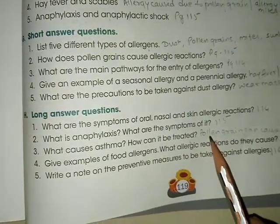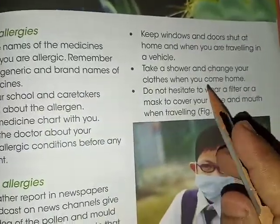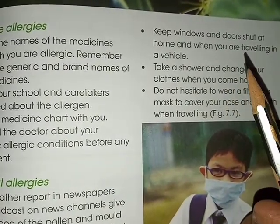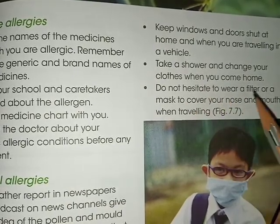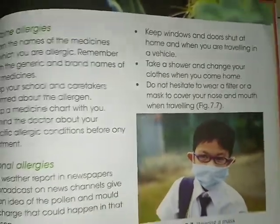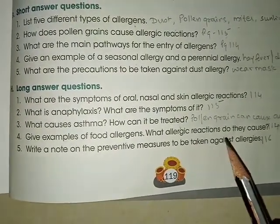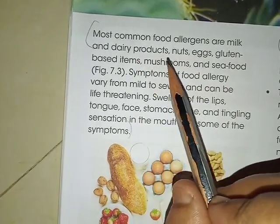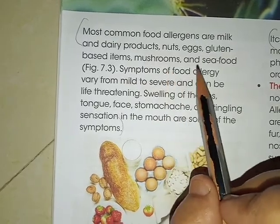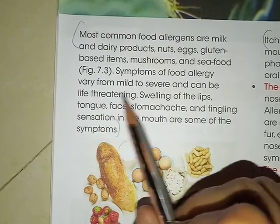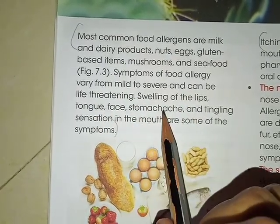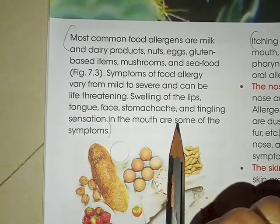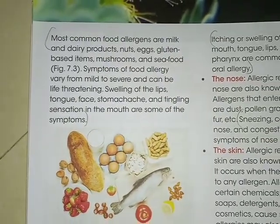Next: what causes asthma and how can it be treated? Pollen grains cause asthma. For treatment, under seasonal allergies: keep windows and doors shut, take a shower and change clothes when you come home, and wear a filter or mask to cover your nose and mouth while traveling. For food allergens and their reactions — the most common food allergens are milk and dairy products, nuts, eggs, gluten-based items, mushrooms, and seafood. Symptoms vary from mild to severe and can be life-threatening: swelling of the lips, tongue, face, stomach ache, and tingling sensation in the mouth.